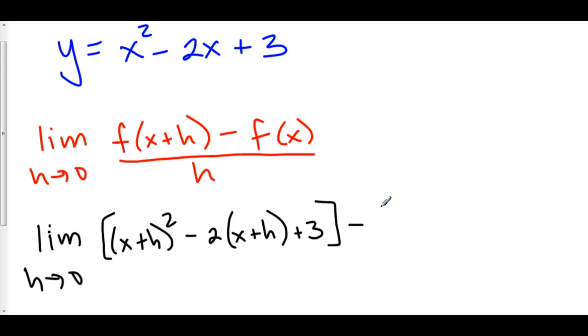Minus f of x. Well, f of x is just x squared minus 2x plus 3, and this is all over h.